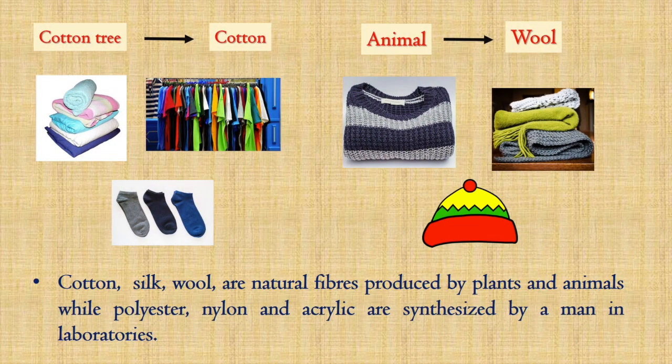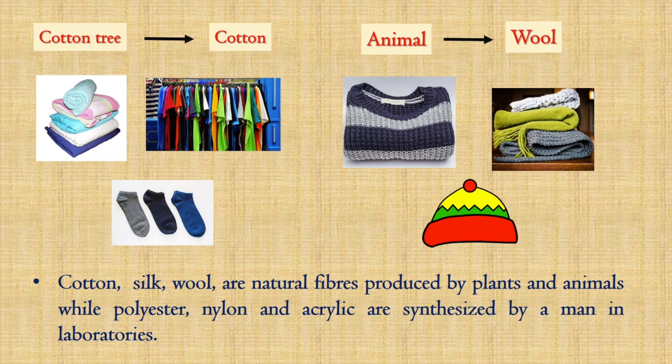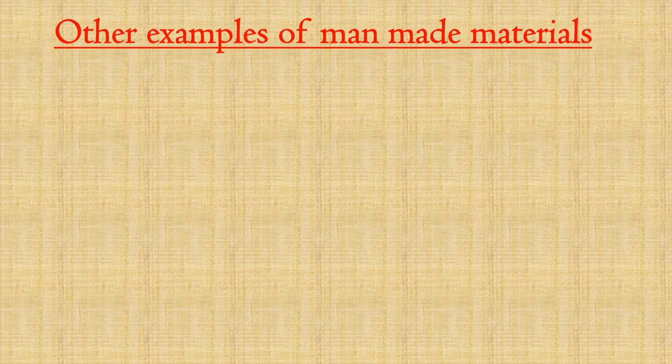In a similar way, cotton, silk, and wool are natural fibers produced by plants and animals, while polyester, nylon, and acrylic are synthesized by man in laboratories. Hence, cotton, wool, and silk are the natural fibers, while polyester, nylon, and acrylic are artificial or man-made fibers.